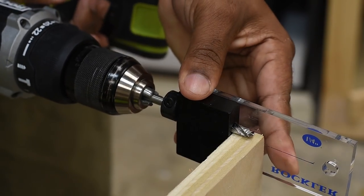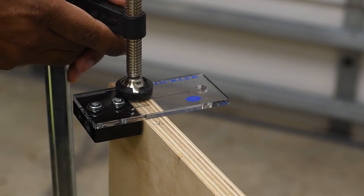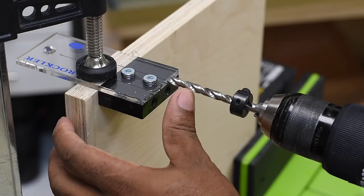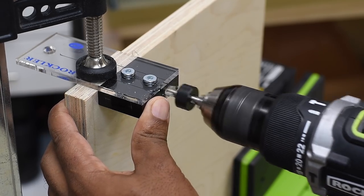On the dowel jig there are a couple lines and the lines are an indication to let you know where's the center point of the bit. So you'll want to place this line on the line that was marked and then clamp that down. At this point I'm ready to start drilling.